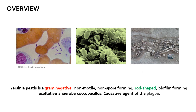Yersinia pestis is a gram-negative, non-motile, non-spore-forming, rod-shaped, facultative anaerobe coccobacillus, and is the agent responsible for wiping out greater than one-third of the European population between the years 1347 and 1353, in what is commonly known as the Black Death, Black Plague, or the Second Pandemic.